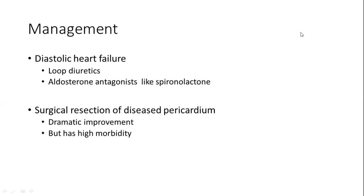Management of chronic constrictive pericarditis is essentially management of diastolic heart failure. Loop diuretics are used, along with aldosterone antagonists like spironolactone. If patients are refractory to medical treatment or have severe disease, some may require surgical resection of the diseased pericardium, which can produce dramatic symptom improvement, though this surgery carries high morbidity.